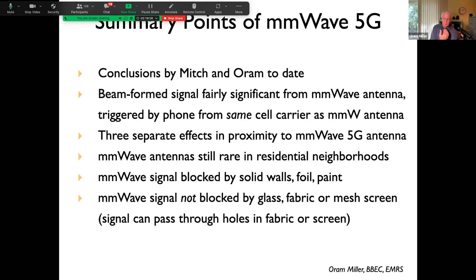By contrast, low and mid band signals — with much longer wavelengths of 12–15 inches at 600–900 MHz low band, and 5–7 inches and even 3 inches up into mid band frequencies like 1800, 1900, 2100, and 2500 MHz — are blocked better by fabric and mesh screen than millimeter wave signals are. There's a big difference in how these shielding materials perform across frequency ranges.